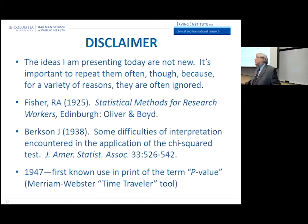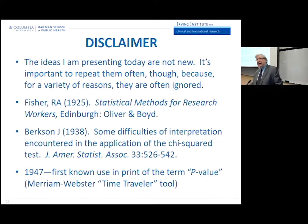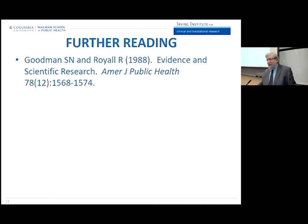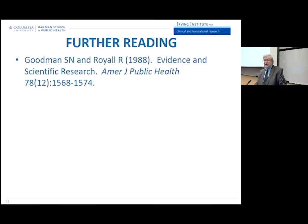Are people familiar with the Merriam-Webster Time Traveler tool? You put in a number and they'll tell you the year a word first appeared in published print. Exactly 70 years ago, the p-value, although it may have been spoken about, actually appeared as an object in print. About 15 years after that, statisticians and clinicians Steve Goodman and Richard Royall from Johns Hopkins published a very nice article. I highly commend you to take a look at it because they asked the very same questions I'll be posing today and have a very well-balanced and easily accessible story to tell.